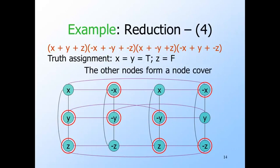If we take the other two nodes from each column, we get a node cover. Surely all the vertical edges are covered since we have two nodes in each column. But what about the horizontal edges? Suppose we have a horizontal edge with X at one end and not-X at the other, and neither end is in the node cover. That means both were selected as the literal that made their clause true. But they can't both be true in any one truth assignment, so they can't simultaneously make their clauses true.